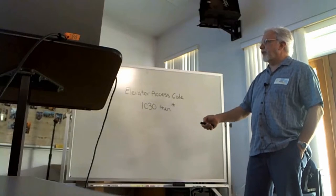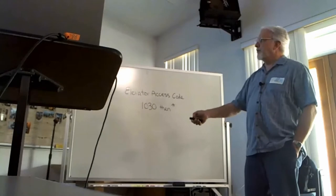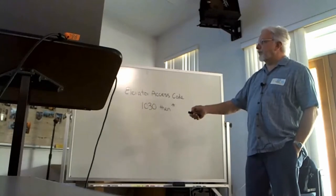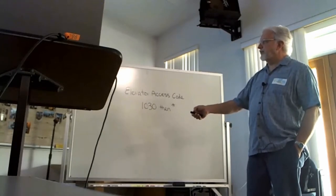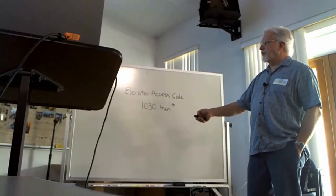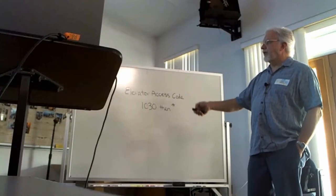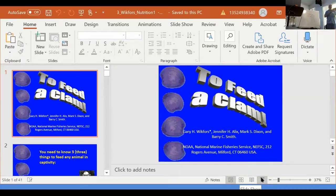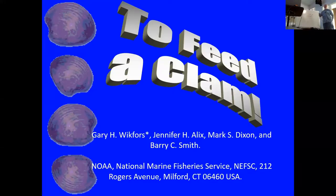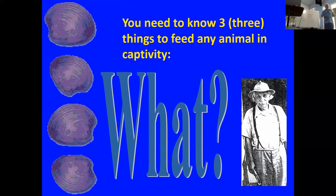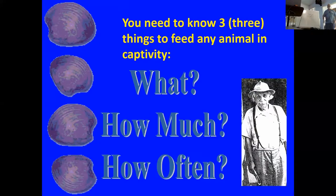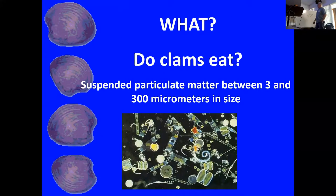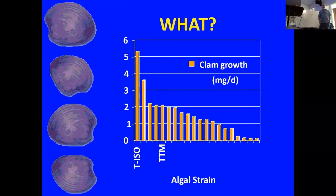There's a positive relationship between clam growth and protein in the diet. Again, this was equalized on bio volume. Positive relationship with total lipid in the diet. A somewhat negative relationship with carbohydrate, but a lot of variation. The variation probably has to do with the fatty acids and the sterols that, at the time we did this study, we weren't thinking about, and I haven't gone back and done the arithmetic.